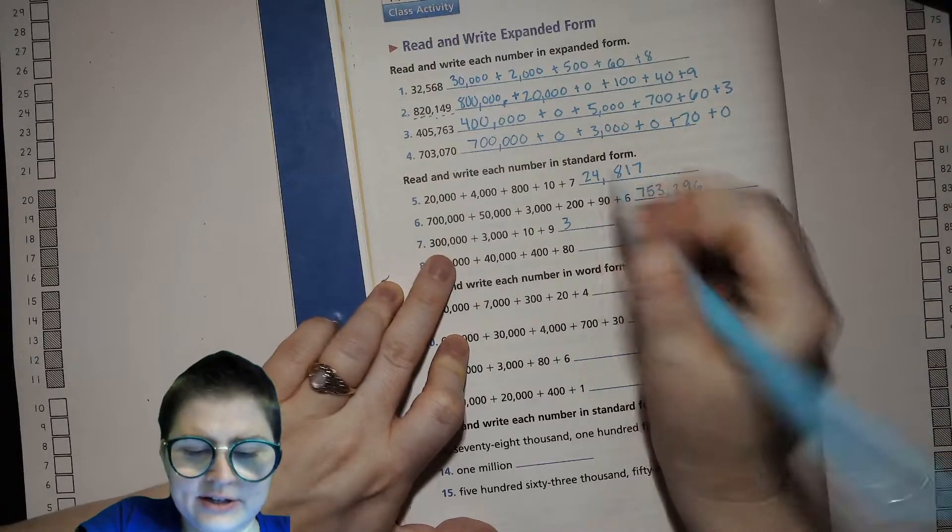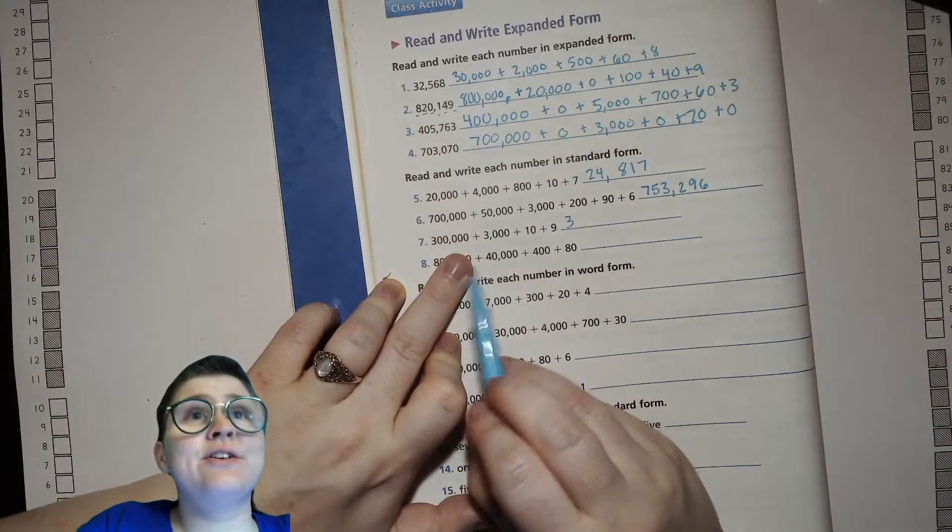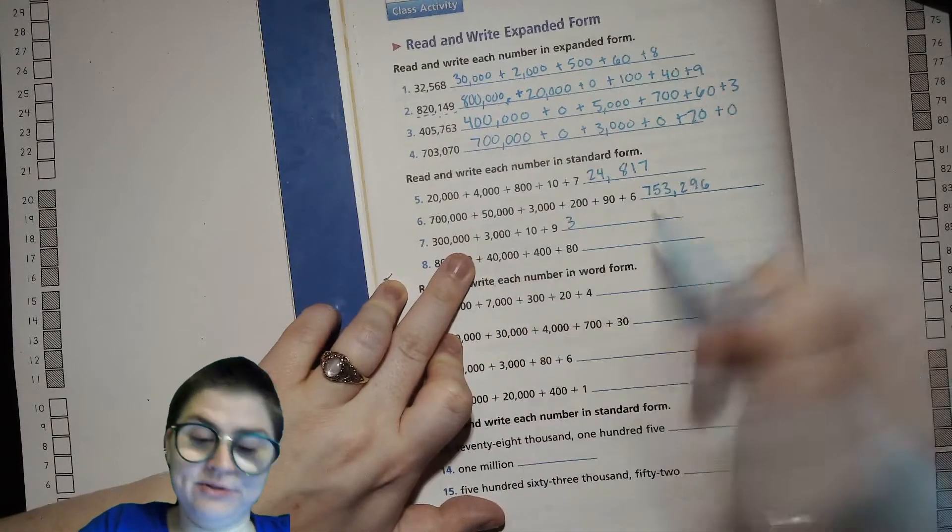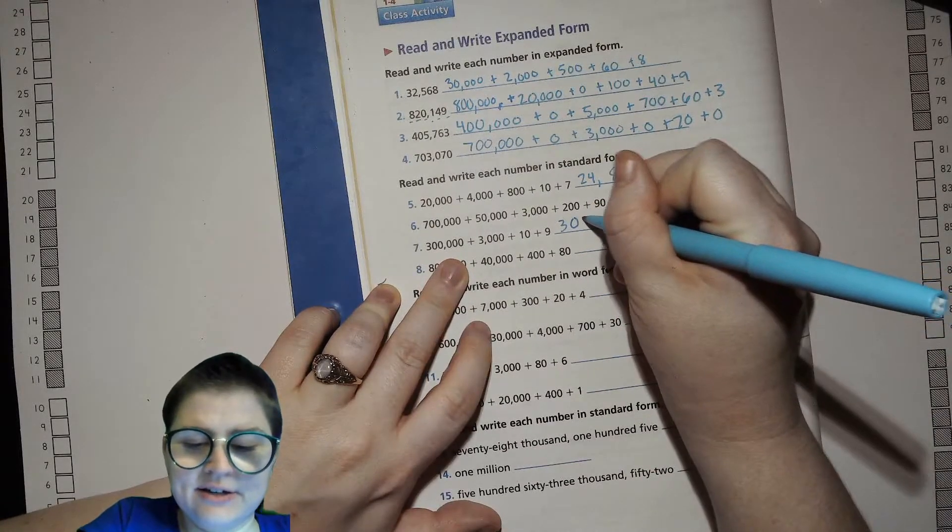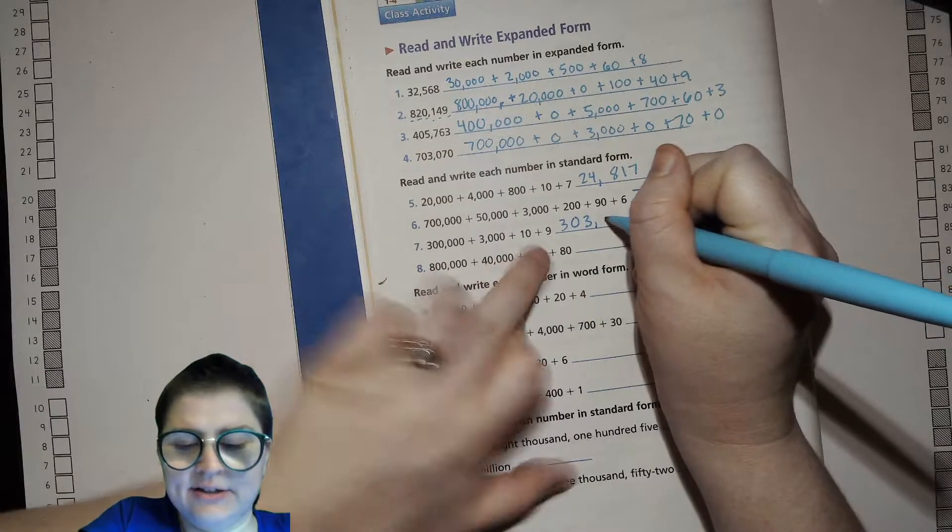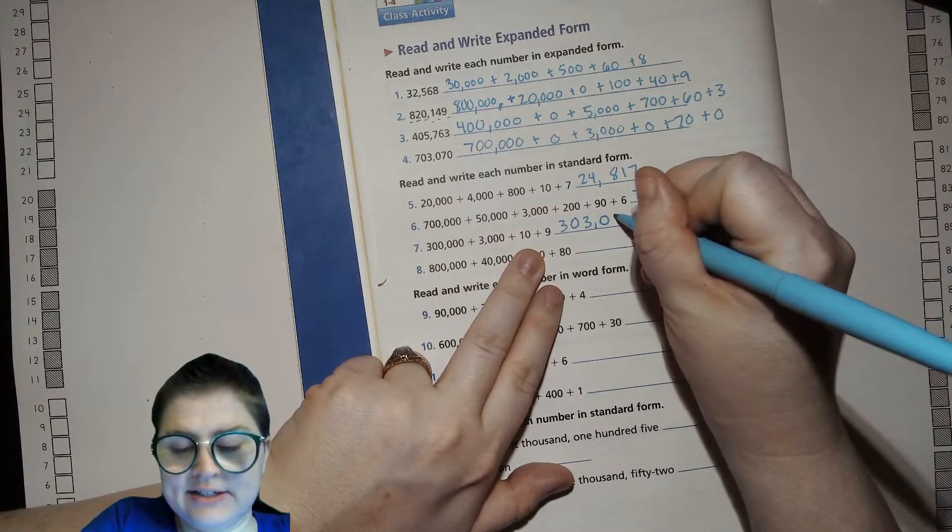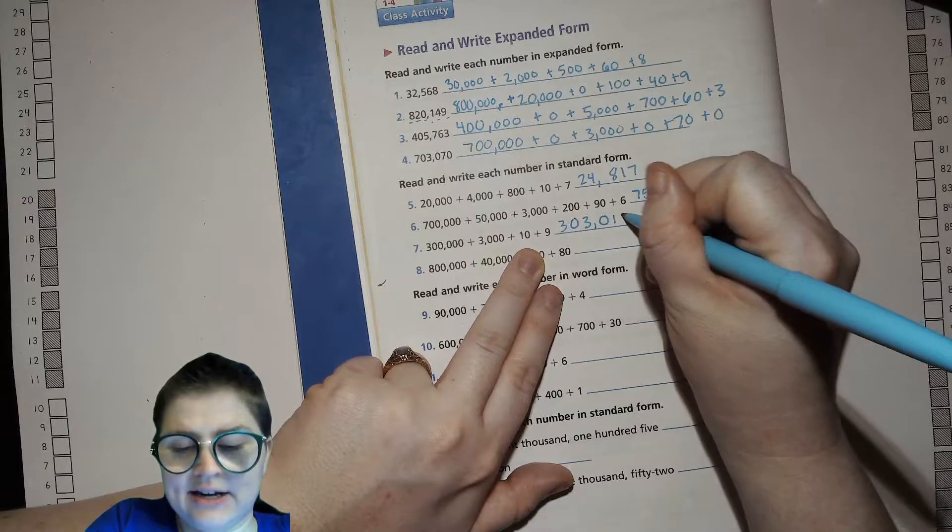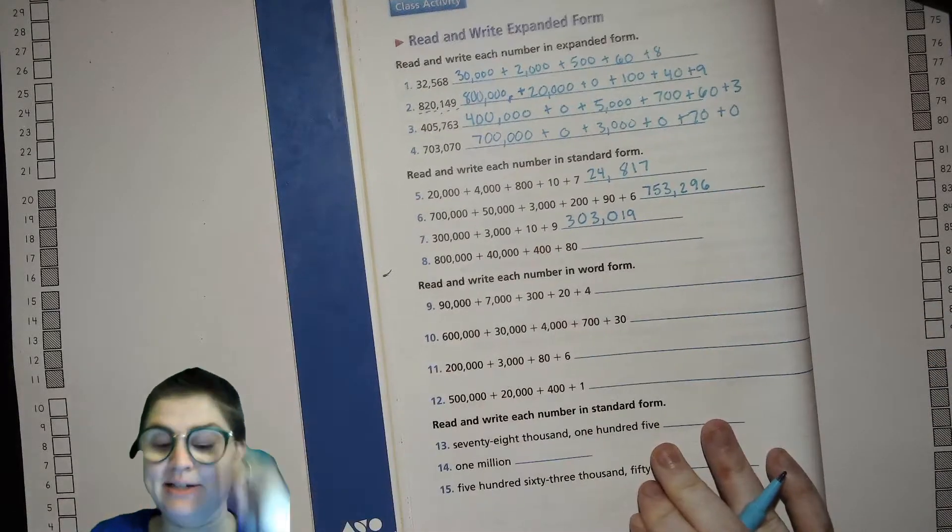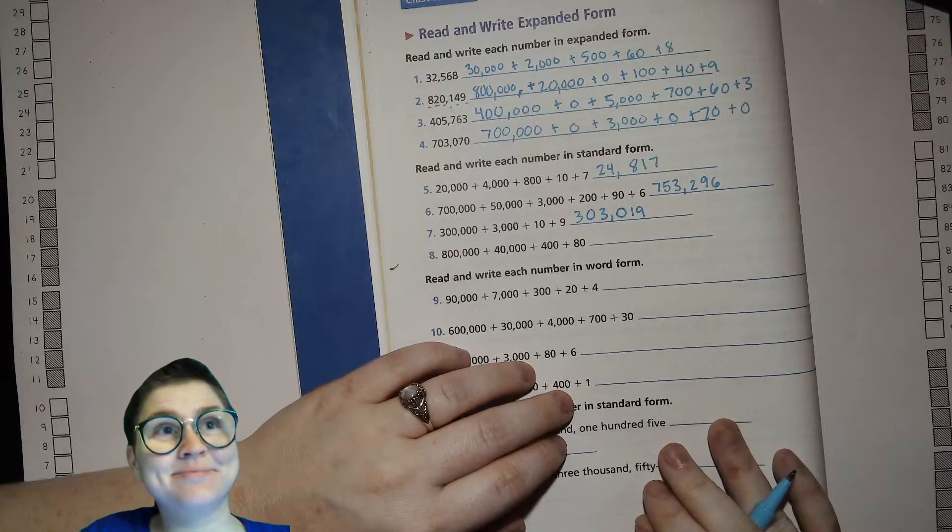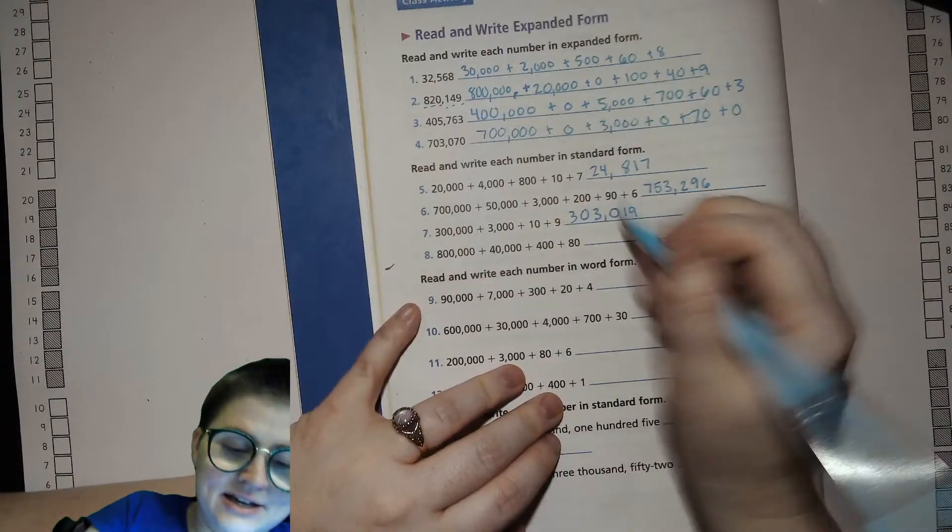300,000. Notice here they didn't do that zero placeholder, so we just have zero ten thousands. 3,000, zero hundreds, 10, 9 in the ones place. That could have stumped somebody, so you got to be careful.